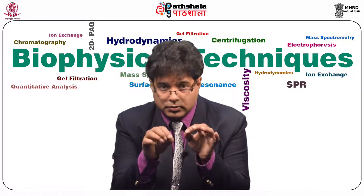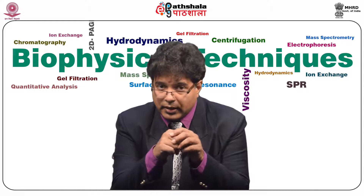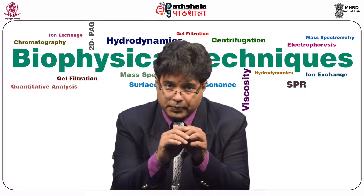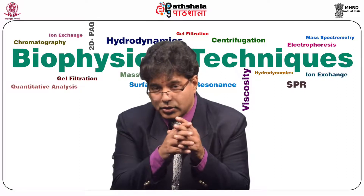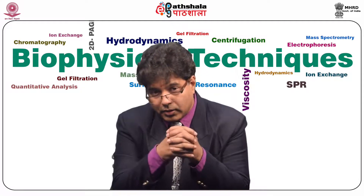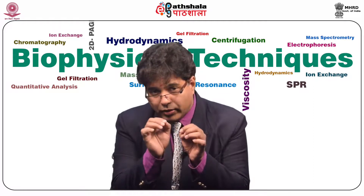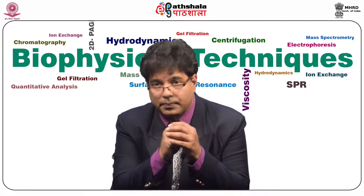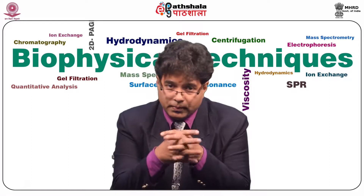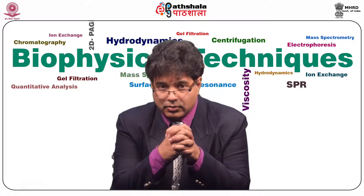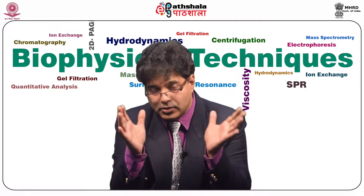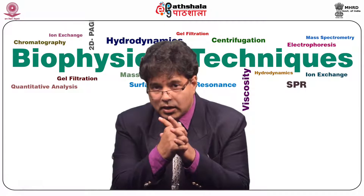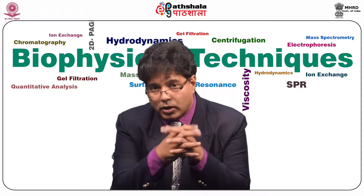In quadrupole mass spectrometry, acceleration is done using RF (radio frequency) voltage and a DC voltage, alternated to resonate a particular mass so it can be isolated, accelerated, and propelled towards the detector. Time of flight uses a reflectron to increase the path of ions, giving better resolution. Magnetic field deflection and time of flight give a somewhat different picture compared to quadrupole mass spectrometry.